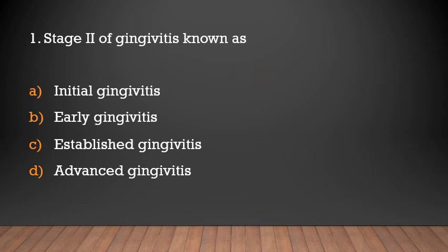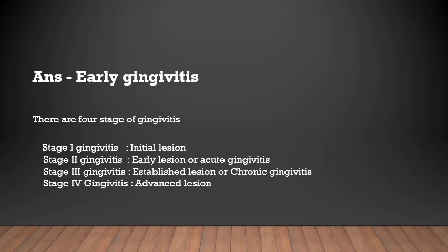Stage 2 of gingivitis is known as: initial gingivitis, early gingivitis, established gingivitis, or advanced gingivitis? The answer is early gingivitis. There are 4 stages of gingivitis. Stage 1 is known as initial lesion. Stage 2 is known as early lesion or acute gingivitis. Stage 3 is known as established lesion or chronic gingivitis. Stage 4 is advanced lesion.